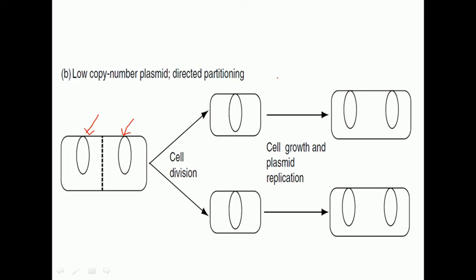Now there are some other types of bacterial cells which control this plasmid number in different ways.